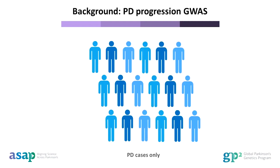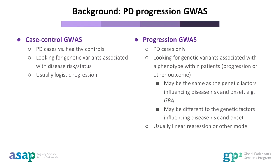However, in the GWAS of progression, you analyse Parkinson's patients only and you are looking for differences between patients. This is because we know there is a lot of heterogeneity between patients in clinical progression. For example, some people will progress slowly, meaning their symptoms stay stable over time, while other people will progress quickly, meaning their symptoms may change and get worse in a short period of time.